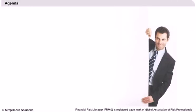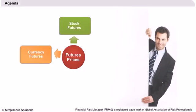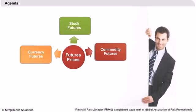Agenda. The main agenda of our discussion will be finding out the expression for the price of forwards and futures. We will learn to apply the expression to find the prices of different types of futures, including stock futures, currency futures, and commodity futures. We will learn about consumption commodities and convenience yield while dealing with commodity futures. We will also compare the pricing of forwards and futures.